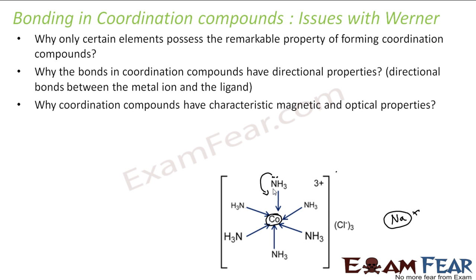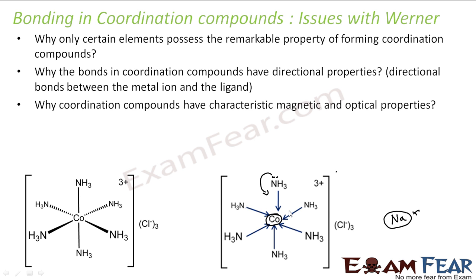Werner theory also could not explain the magnetic and optical properties for coordination bonds. So to explain these, many theories were proposed: valence bond theory, crystal field theory, ligand field theory, molecular orbital theory. We will focus on two — valence bond theory and crystal field theory — which will be explained in this chapter.